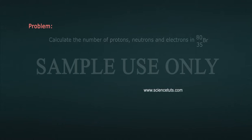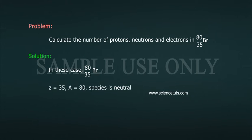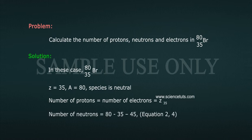Problem: Calculate the number of protons, neutrons and electrons in Br-35-80. Solution: In this case, Br-35-80, Z is equal to 35, A is equal to 80, species is neutral. Number of protons is equal to number of electrons is equal to Z, 35. Number of neutrons is equal to 80 minus 35, 45.